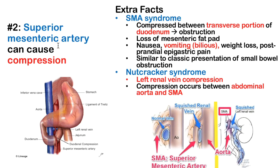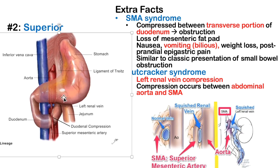The SMA can cause compression via two major syndromes. The first is SMA syndrome, where the artery compresses the transverse portion of the duodenum. The superior mesenteric artery branches off at L1 and runs just over the duodenum. Between the SMA and the aorta behind it sits the duodenum — with enough pressure these two vascular structures compress the duodenum, causing duodenal compression.